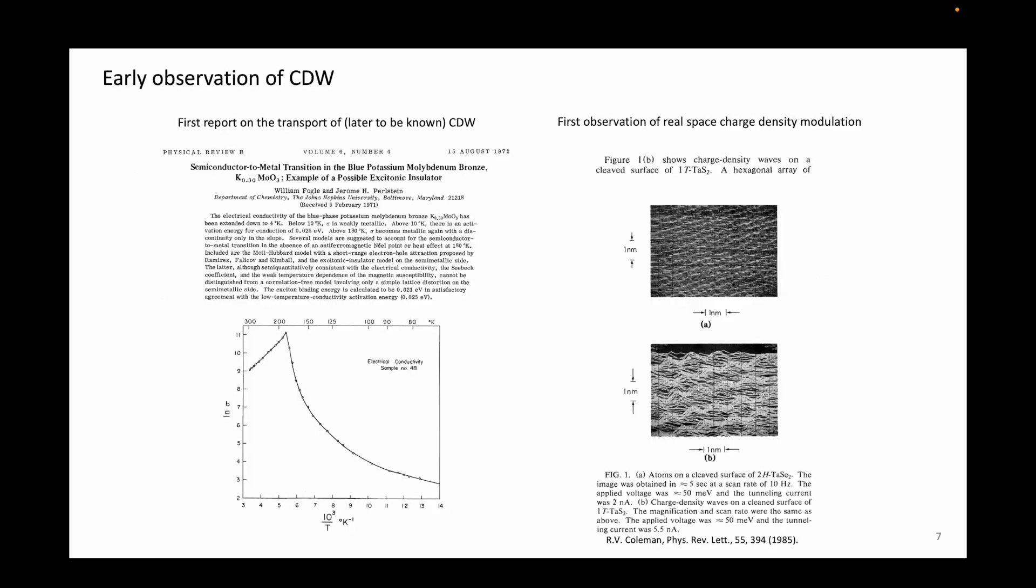After his first thought experiment in 1955 it took several years till the first report of the experimental observation of charge density waves. On the left is the first report on the observation of charge density wave to the best of my knowledge. It was first seen in blue molybdenum bronze where the temperature dependence of the conductivity shows a strong phase transition like signature. It was initially thought that this was an excitonic insulator, later to be confirmed to be charge density wave. On the right is the first real space observation of a charge density wave state in tantalum disulfide and tantalum diselenide recorded with a scanning probe microscope. As you can see, the first observations of charge density waves were in 2D materials rather than 1D.